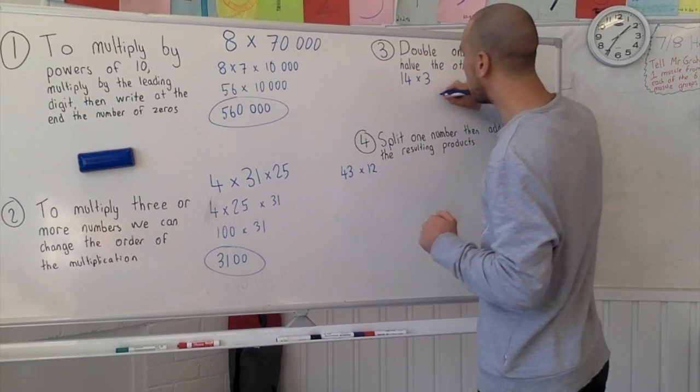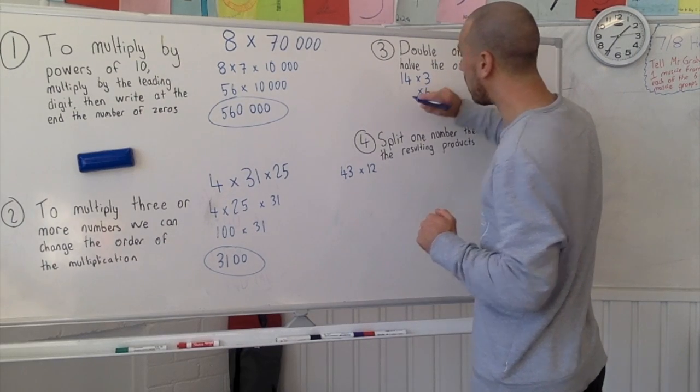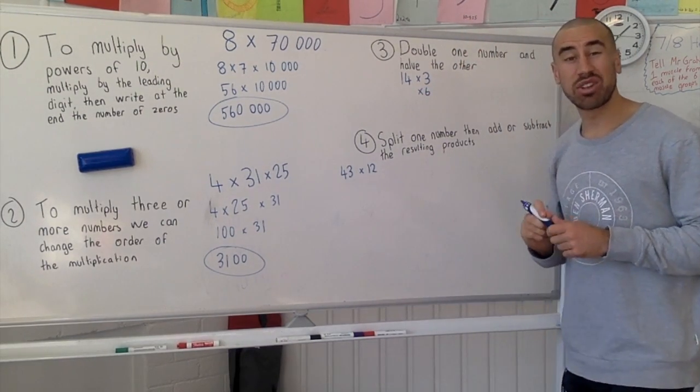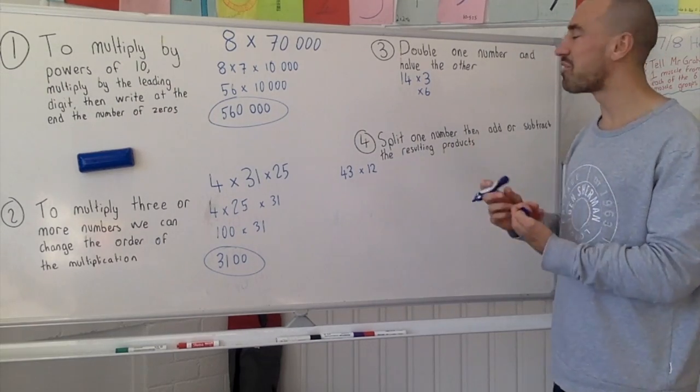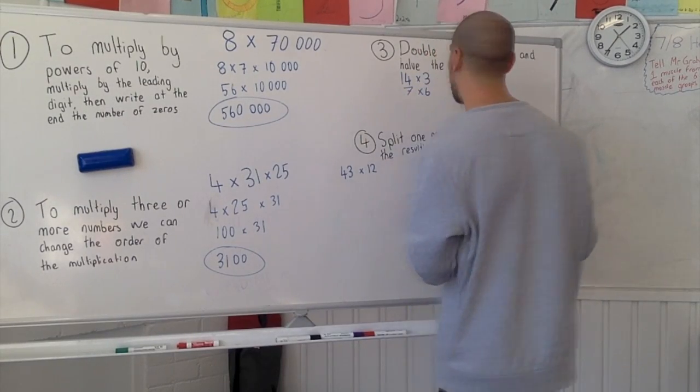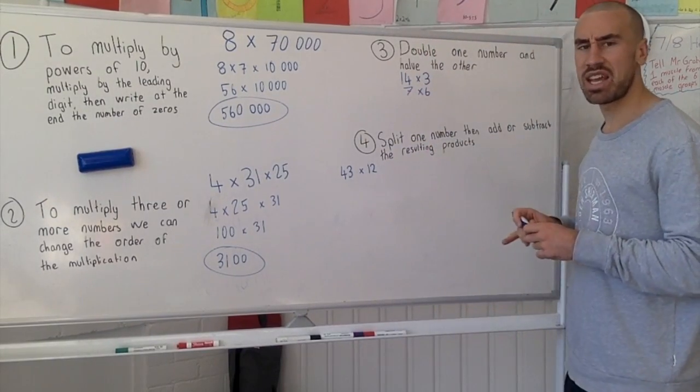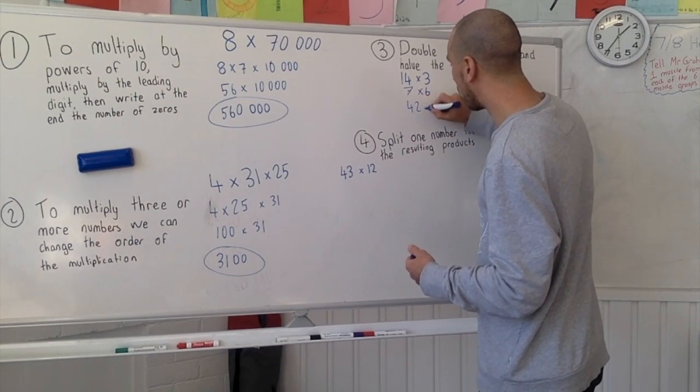Exactly, exactly, spot on. I'm sure you're yelling at your computer screens there. We are going to double that three, that will become a six. And then with the 14, are we going to double that or halve it? We're going to halve it. Seven times six we can do that just in our heads and that will give us 42.